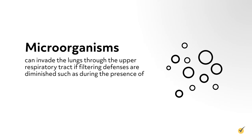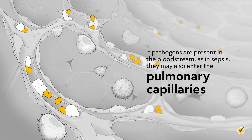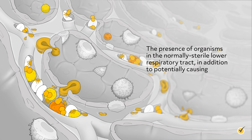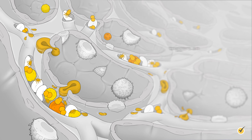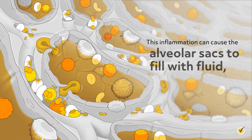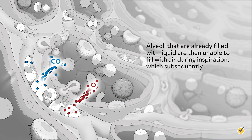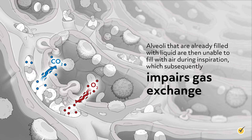Microorganisms can invade the lungs through the upper respiratory tract if filtering defenses are diminished, such as during an upper respiratory tract infection or through aspiration. If pathogens are present in the bloodstream, as in sepsis, they may also enter the pulmonary capillaries. The presence of organisms in the normally sterile lower respiratory tract triggers an inflammatory immune response as the body attacks the invaders. This inflammation can cause the alveolar sacs to fill with fluid, including white blood cells or pus.